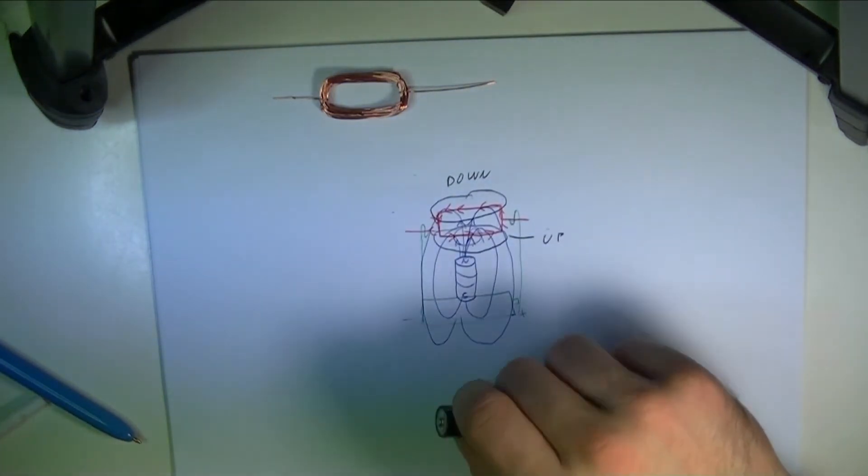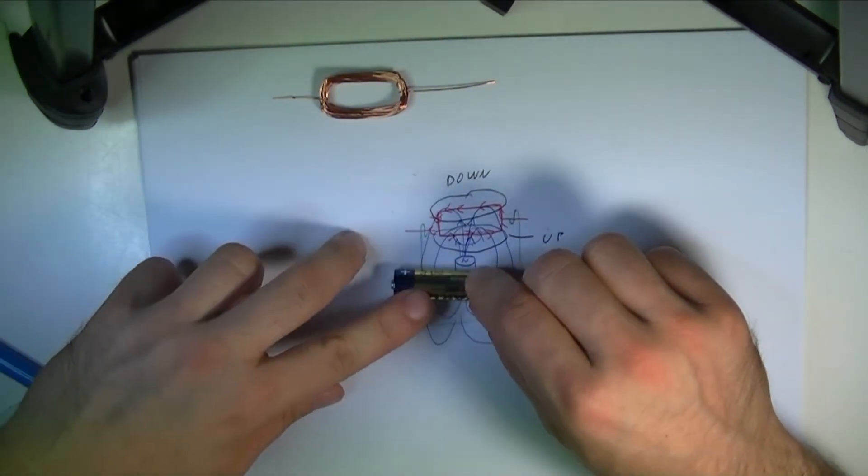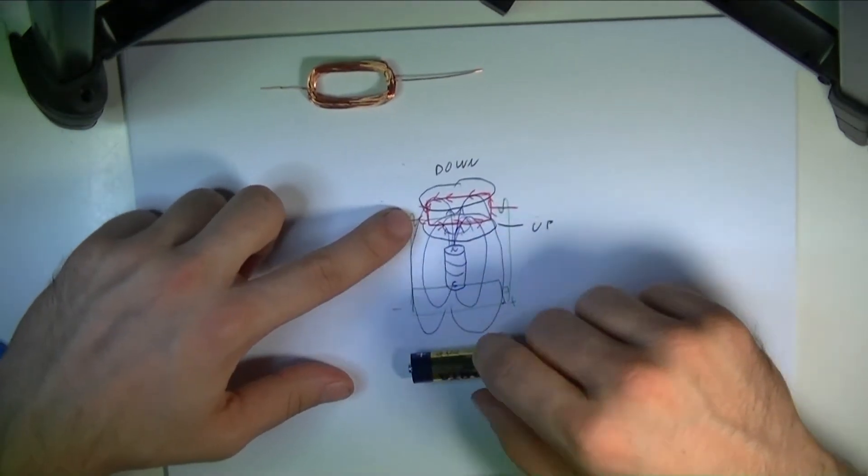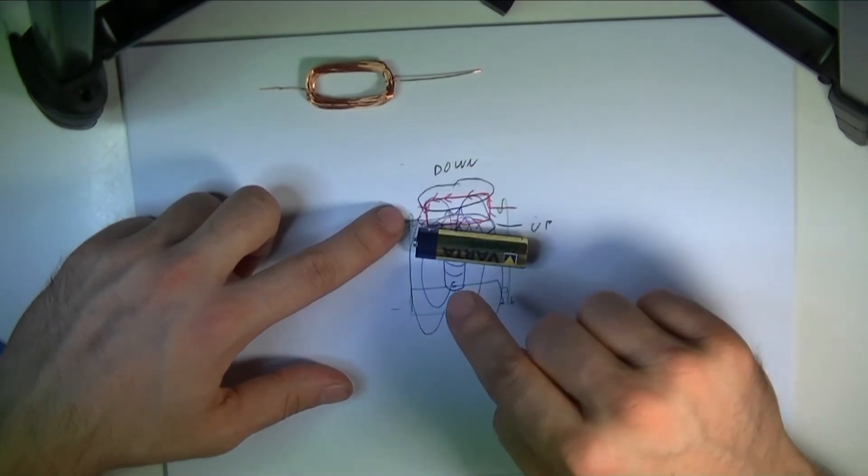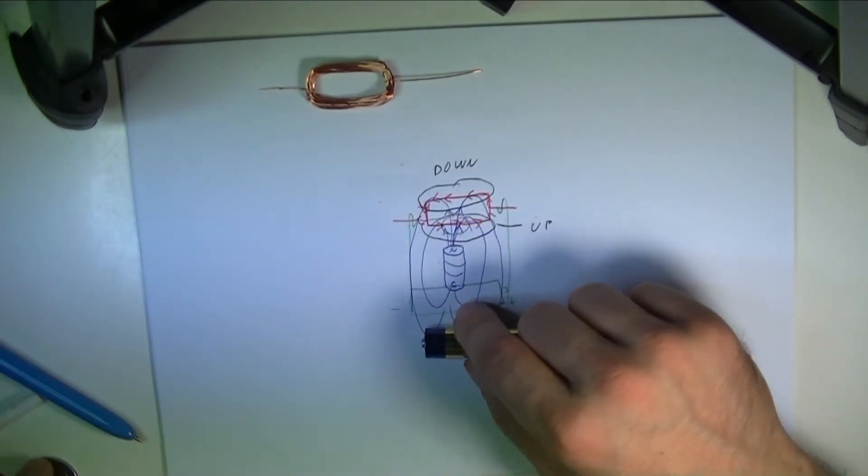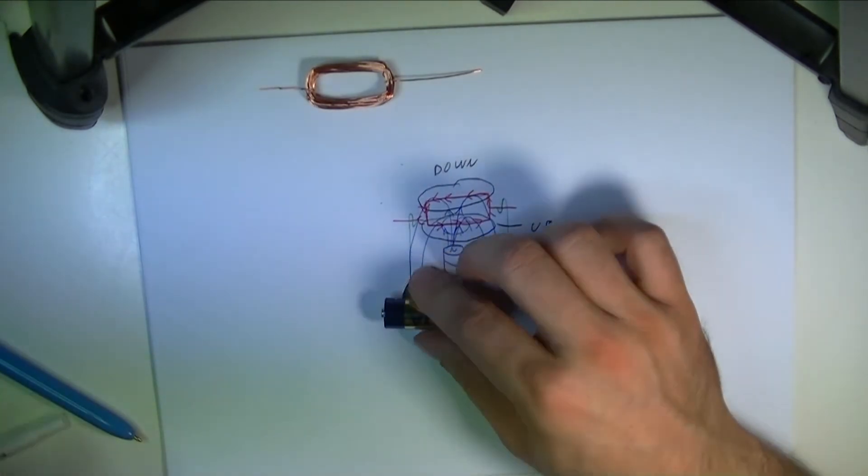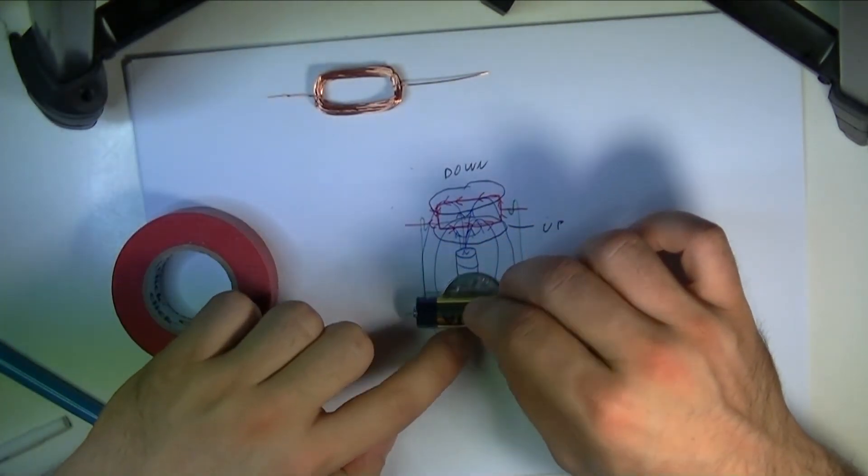Now our next problem comes we are going to need to take this battery and have two wires coming out right here completing the circuit and also something to prevent this battery from rolling. Now to prevent the battery from rolling it's quite easy you just take anything kind of flat and sturdy and you tape it to the bottom.